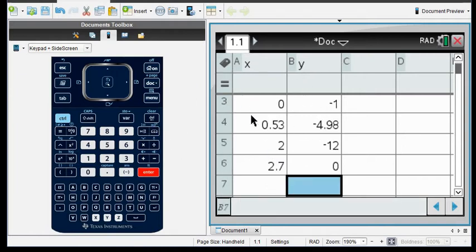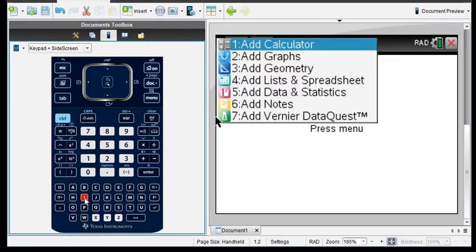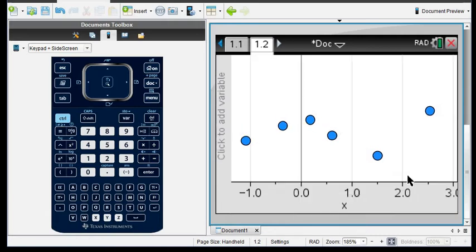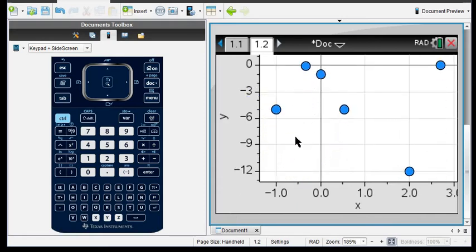Once you have your data entered, you're going to hit the control button and the letter I for insert, so control insert or control I, and we're going to add a data and statistics screen. This one is very nice about adding the data point, so I can put in X and then I can click to add Y, and you can see right away the overall pattern with this.